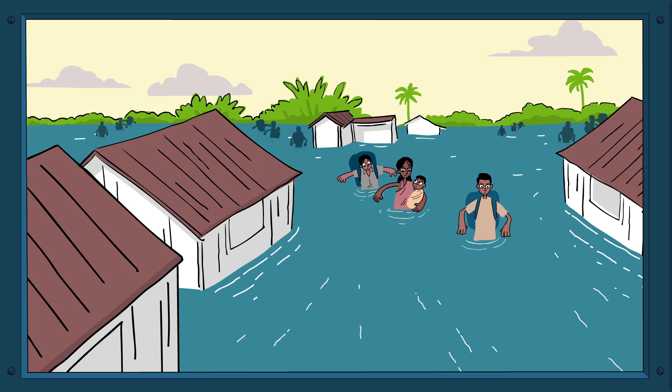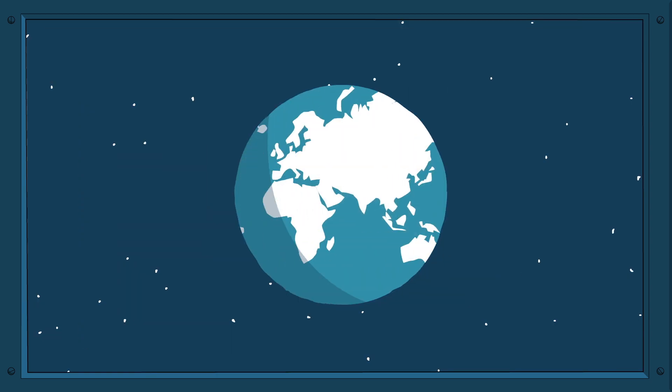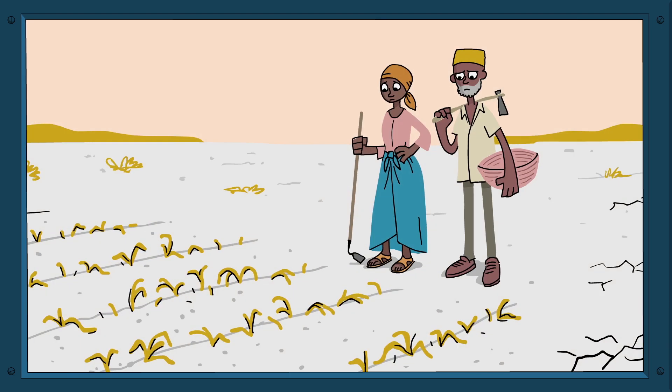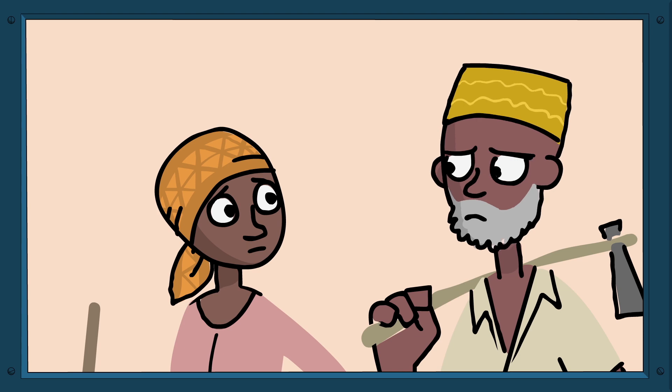And while some have too much water, others have too little. Farmers in Africa are suffering from major droughts and are unable to grow food. This is terrible stuff, it's really scary to think about.